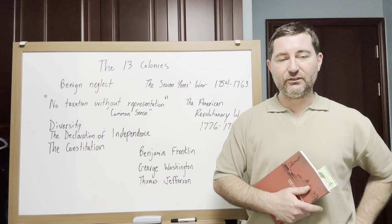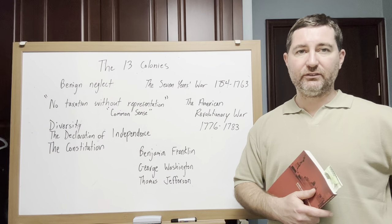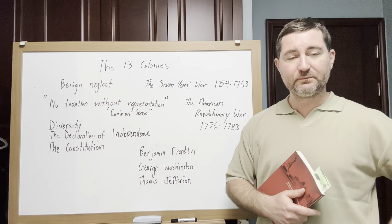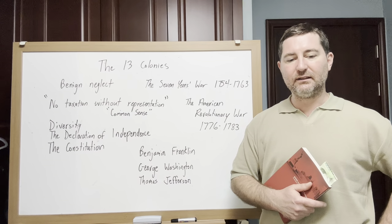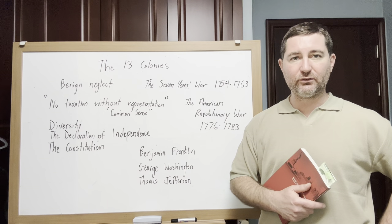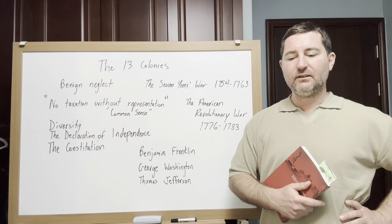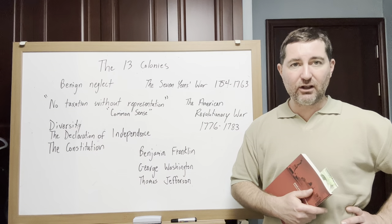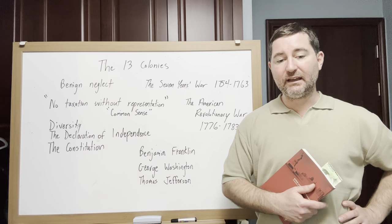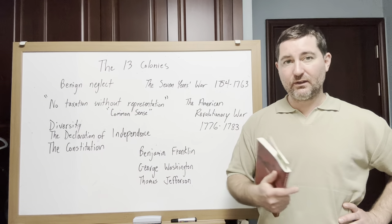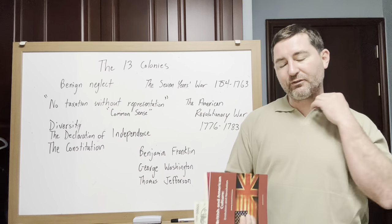One of the things that was a big problem was the fact that there were already people there. Native people had been living there for thousands of years and they occupied the land that the settlers and colonists wanted to build on. The main reason the Europeans had an advantage was their technology - gunpowder, steel, ships, glass making, horses, and domesticated animals.